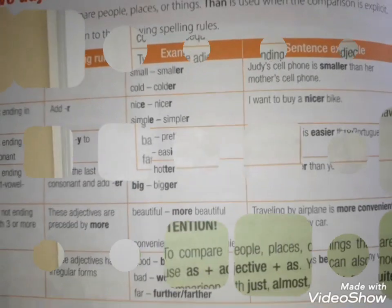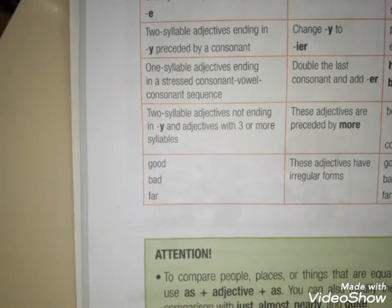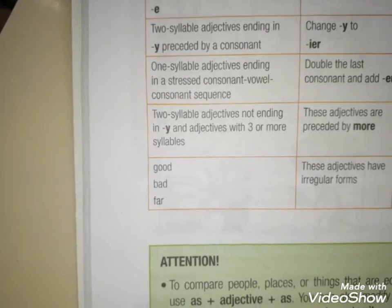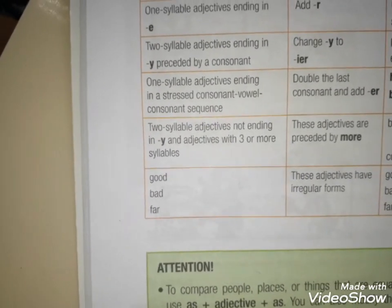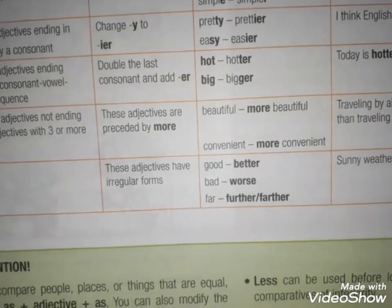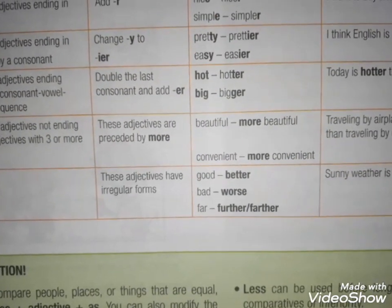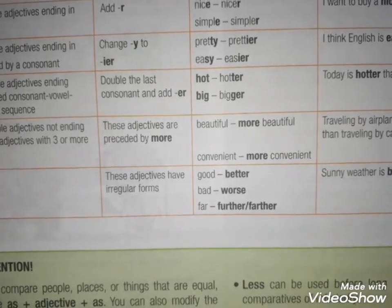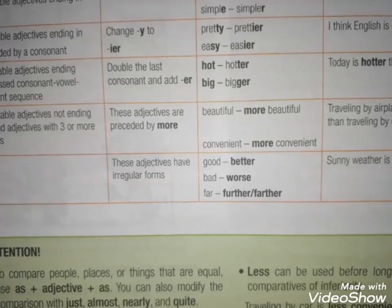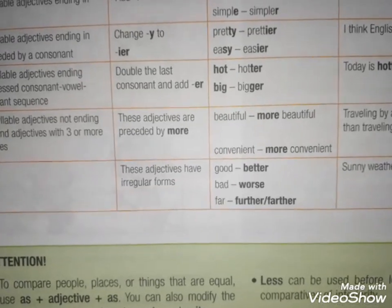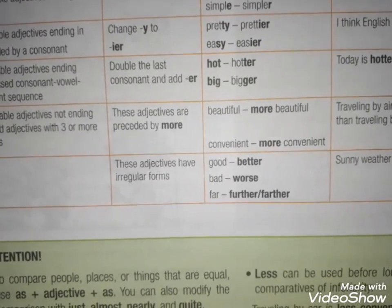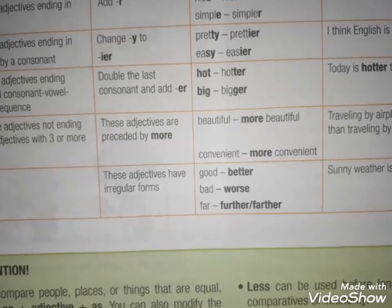Como eu falei pra vocês, nos irregulares, a palavra good (bom), bad (ruim), far (longe) são adjetivos irregulares. Em vez da gente falar 'gooder', a gente fala better. Good, bom → better, melhor. Em bad, em vez de falar 'badder', a gente fala worse. Bad, ruim → worse, pior que. Far, longe → further ou farther.